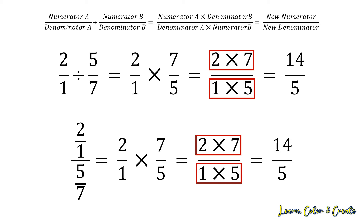14 over five — since the top number is larger than the bottom, this is called an improper fraction. On your exam, you'll need to convert that to a mixed fraction or a decimal for your final answer, and we will cover that conversion in another lecture.